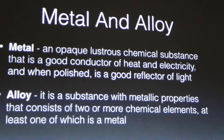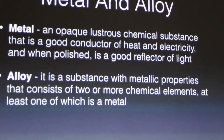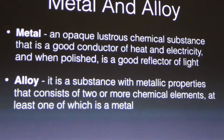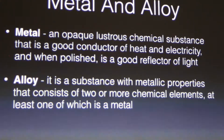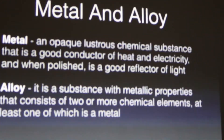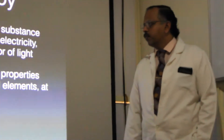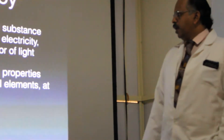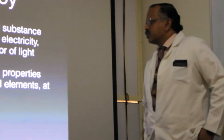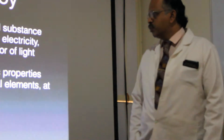Generally, we don't use metals by themselves in dentistry. We generally use alloys because of the properties that we get from alloys. The only time when we use a metal by itself is when we are dealing with implants — if an implant is made of commercially pure titanium, then we use the metal by itself. Otherwise, most of the time it is an alloy, which is a substance with metallic properties consisting of two or more chemical elements, out of which at least one is a metal.